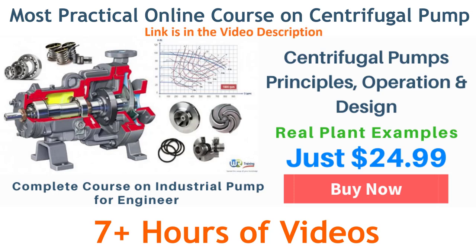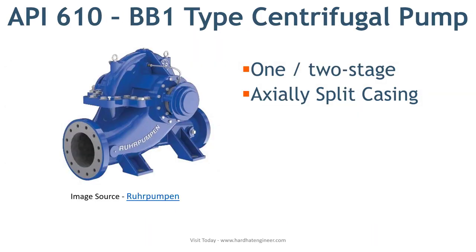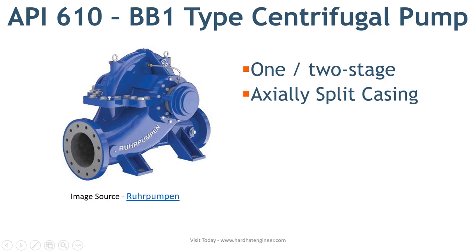Next is the API 610 category of centrifugal pumps known as between bearing multi-stage pumps, popularly known as BB type. The first is BB1, which is a horizontally installed one or two stage pump. The casing of this pump is axial split type. The pump is directly mounted on a base plate and driven by the motor via flexible coupling.